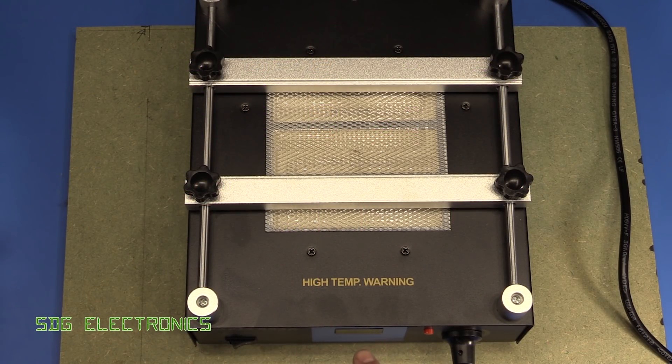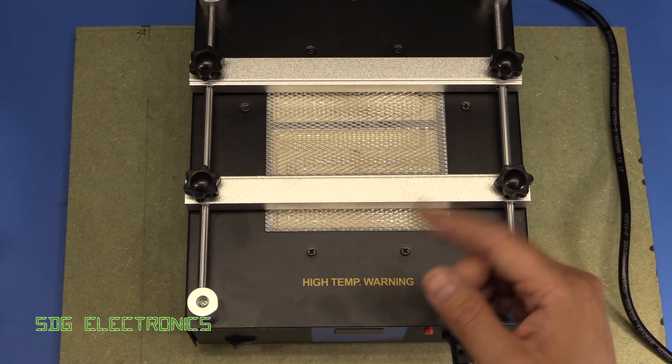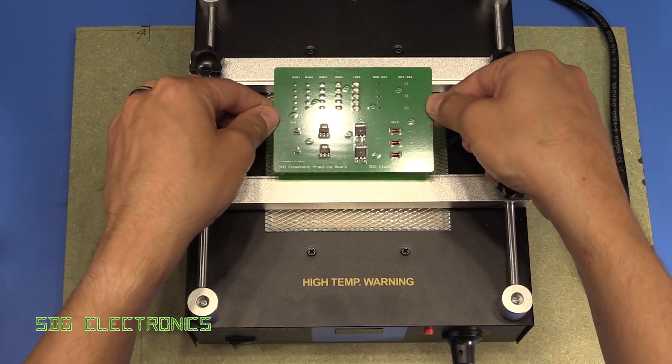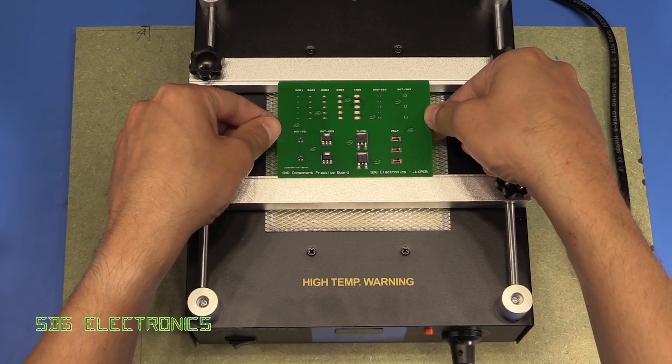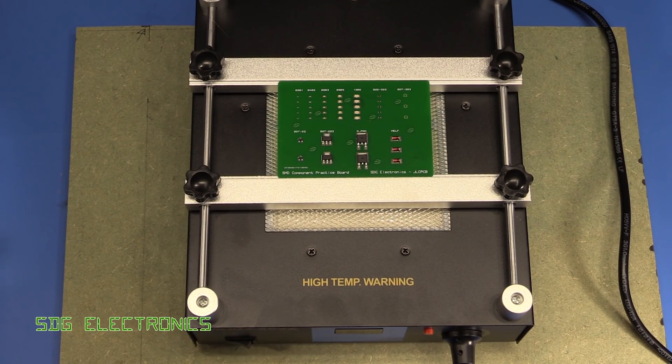We've got the Yihua 853A infrared heating station which I just did a video on, so I'll put a link above here. We should be able to put the PCB on the holder like this. We'll turn this on now and I'll set this to 350 degrees, and we can slowly watch this warm up.